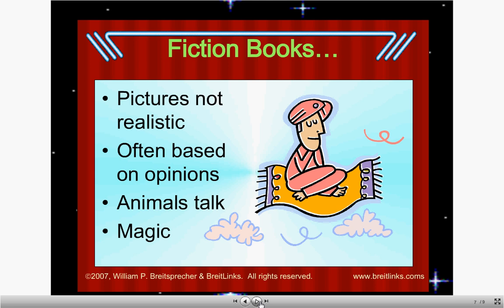After these two slides, I want you to push pause and write down in your Informative Notes fiction books and non-fiction books — three to five examples. It could also be authors, since there are certain authors that write non-fiction only. For fiction books: pictures are not going to be real, they're often based on opinions, animals can talk, and there's magic. When animals talk, that might be a fantasy or another type of narrative.